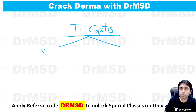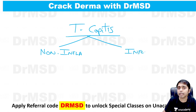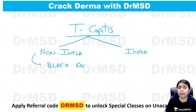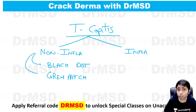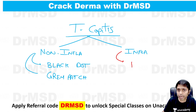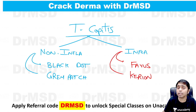Tinea capitis is of two types. One is the non-inflammatory variety and the other is the inflammatory variety. In the non-inflammatory, we have two examples you must know: black dot type and gray patch variety. In the inflammatory variety — which is very bad because it causes permanent hair loss, that is scarring alopecia — the examples are favus and kerion.